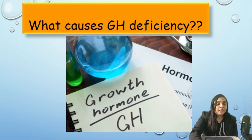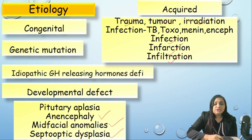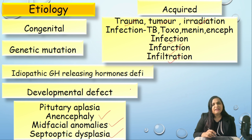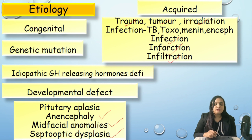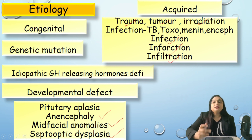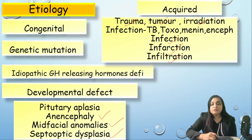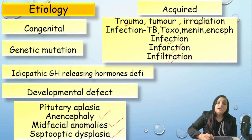Conditions leading to growth hormone deficiency include congenital causes — genetic mutation, idiopathic GH-releasing hormone deficiency, and developmental defects where the pituitary gland is not formed properly, such as pituitary aplasia, anencephaly, mid-facial anomalies, or septo-optic dysplasia. Acquired causes include trauma, tumor, radiation, or infections such as tuberculosis, toxoplasmosis, meningitis, or encephalitis. The mnemonic is 2T (trauma, tumor) and 3I (infection, infarction, infiltration).